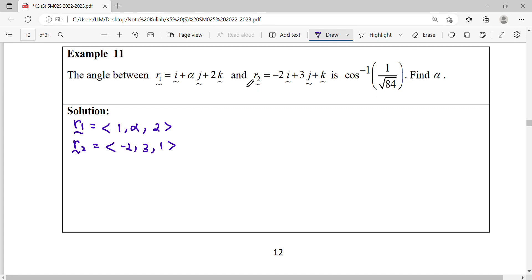They said the angle between this vector means the angle is equal to cos inverse 1 over square root 84.